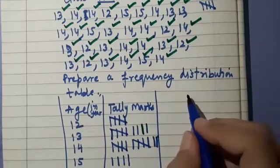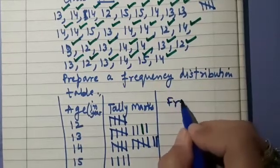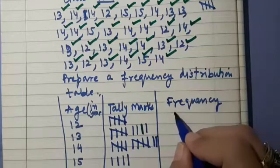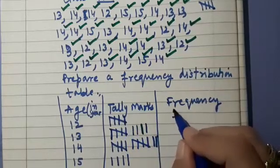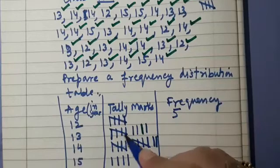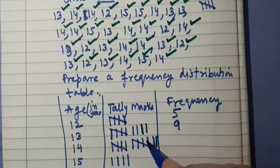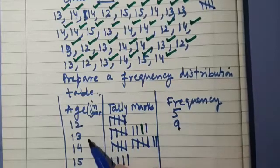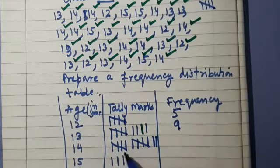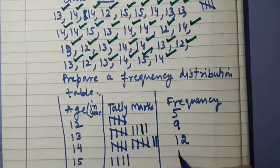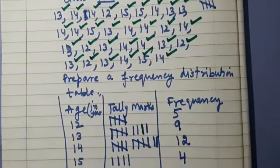Now we are going to count and write down the frequency as per the tally marks we have marked. For age 12: you see there is a bunch of 5 so we write 5. For age 13: 5 plus 4 gives us 9 — there are 9 students whose age is 13 years. For age 14: 5 plus 5 plus 2 gives 12 — 12 students have age 14 years. For age 15: there are 4 students who have age 15 years.